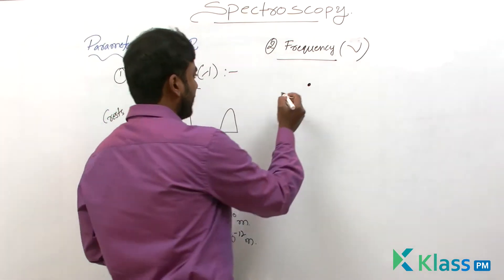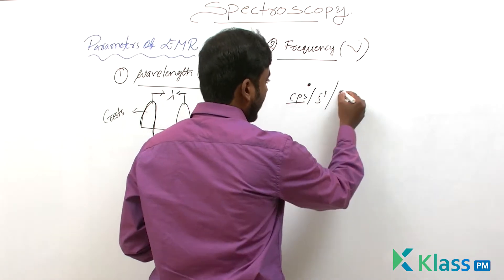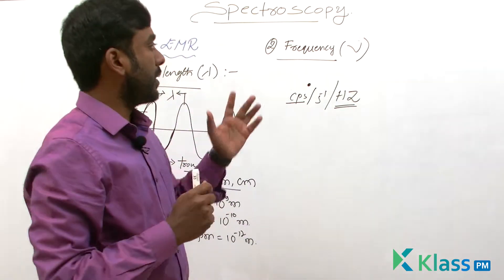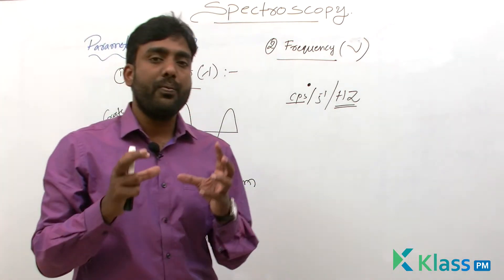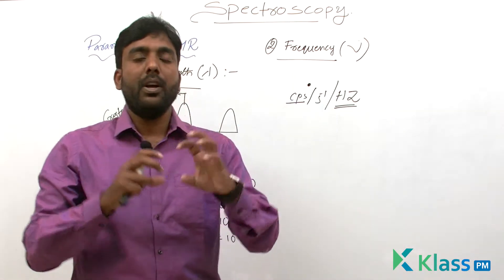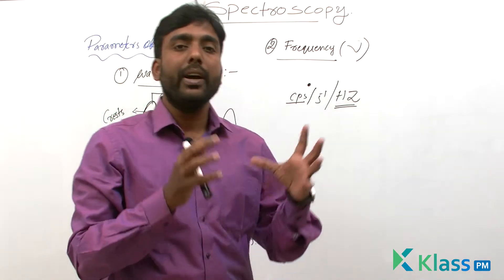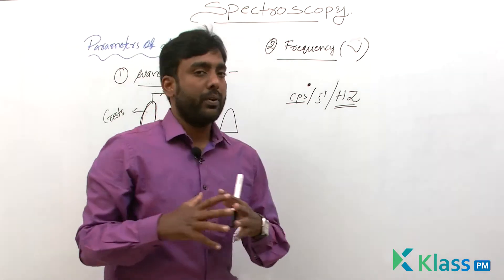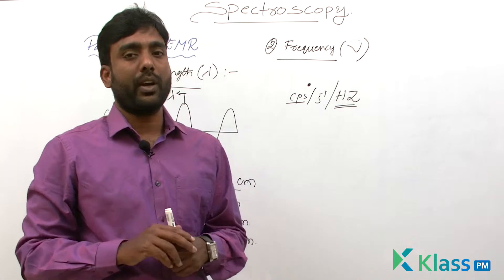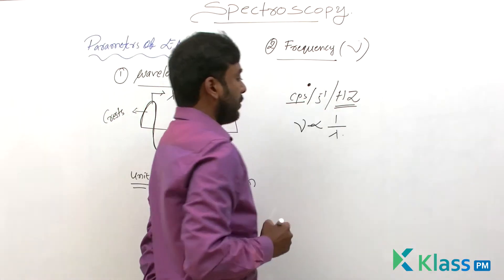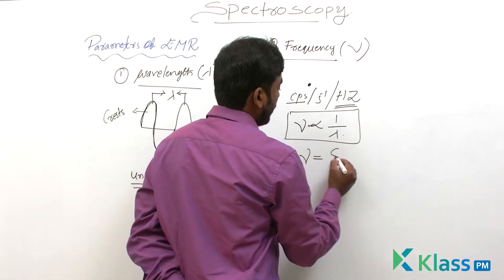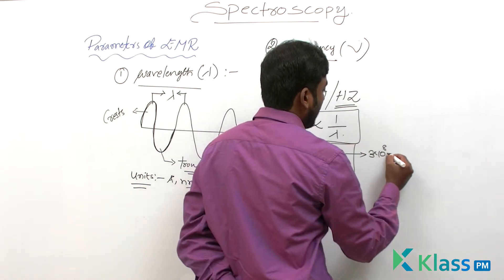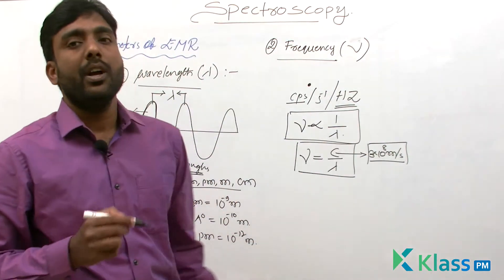The units for frequency are cycles per second, per second, or Hertz. The relation between frequency and wavelength is an inverse relation — if wavelength increases, frequency decreases, and vice versa. Removing the constant gives us: nu equals C divided by lambda, where C is the speed of light, equal to 3 times 10 to the power of 8 meters per second.